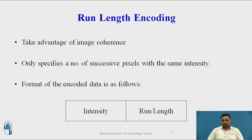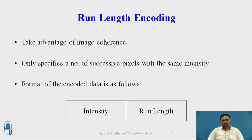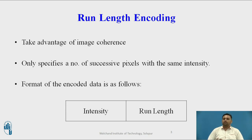So what is run length encoding? It takes advantage of image coherence. Image coherence means that in a particular image there are multiple pixels, and a particular area in the image holds the same color — the same properties and characteristics. All pixels in that particular area hold the same values, so it is called image coherence.